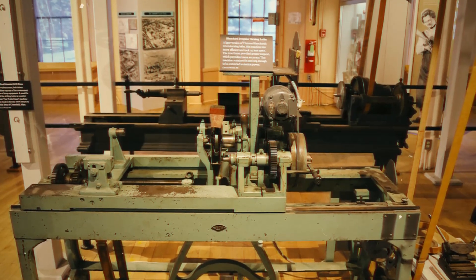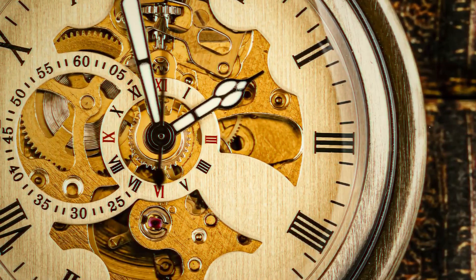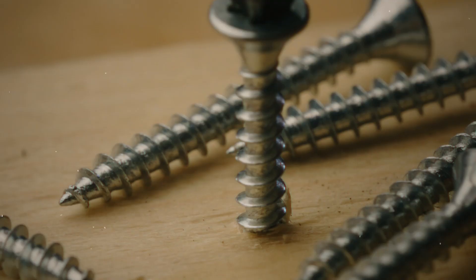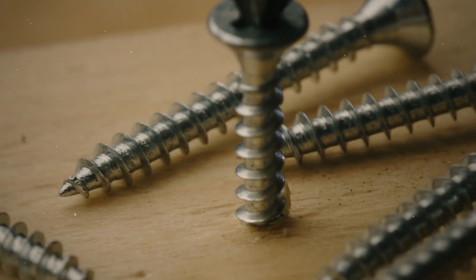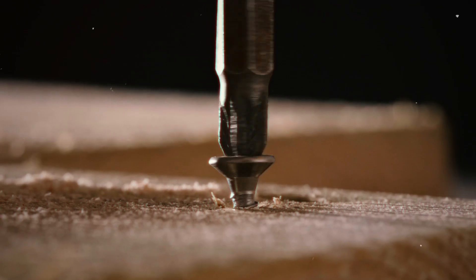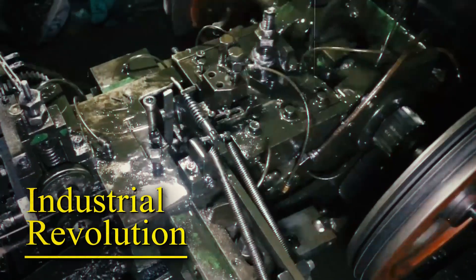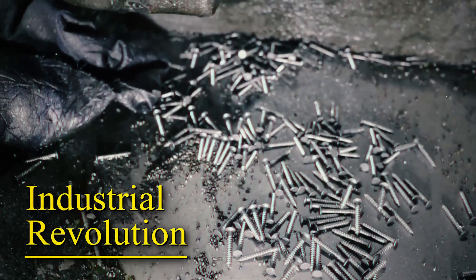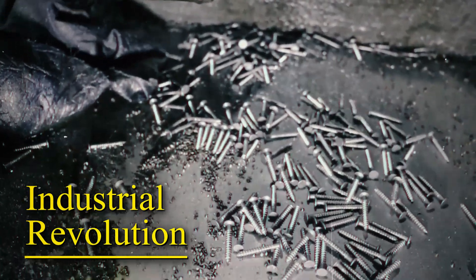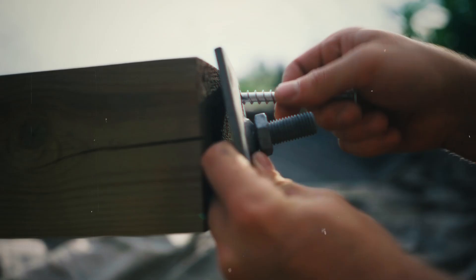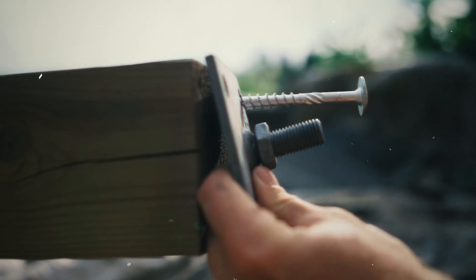But even with da Vinci's genius, screws were still reserved for specialized tasks. They were used in fine machinery and delicate instruments, but they weren't yet part of everyday life. What would finally make screws a part of daily use for everyone? The industrial revolution changed everything. Machines were invented that could mass-produce screws quickly and cheaply. This not only standardized screws but also made them much cheaper, allowing builders and craftsmen to use them easily.